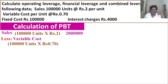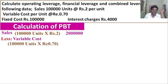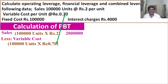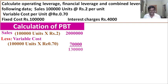Now deduct variable cost from sales. Variable cost: the number of units sold is one lakh, and the variable cost per unit given in the problem is 70 paisa per unit. So one lakh units multiplied by 70 paisa equals total variable cost of rupees 70,000.